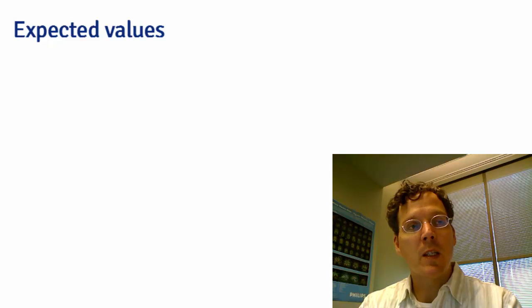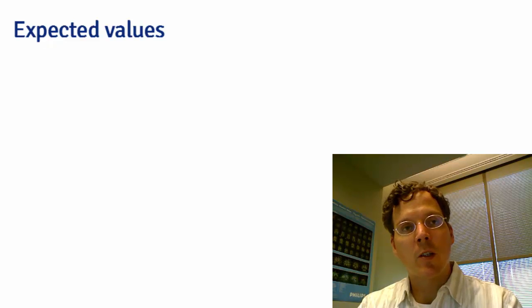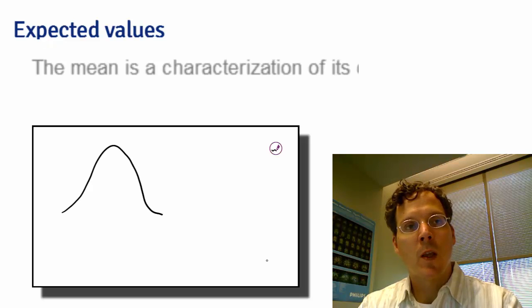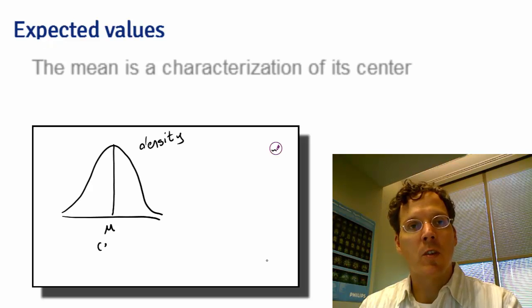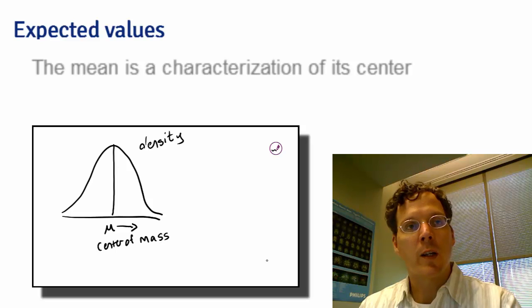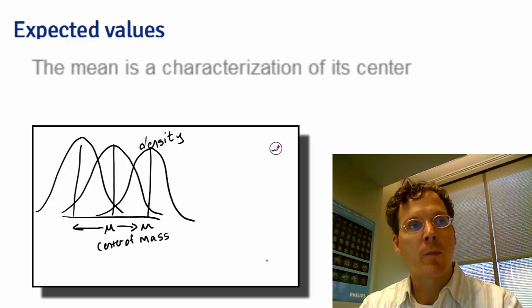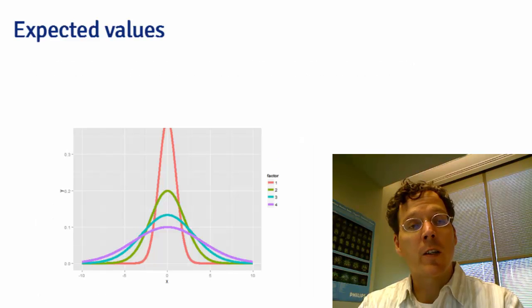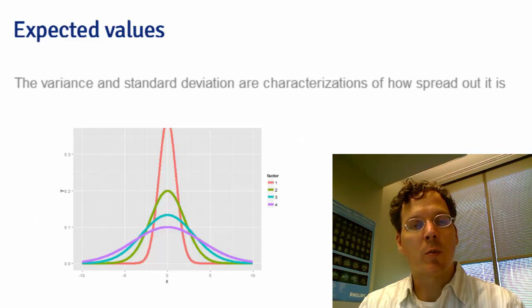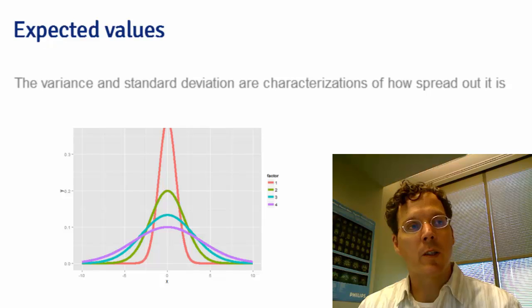Expected values, the mean is the most useful expected value, it's the center of a distribution. As the mean changes, the distribution just moves left or right. The variance is another characteristic of a distribution and it talks about how spread out it is.